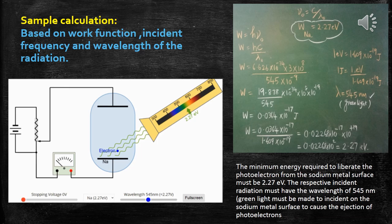Work function is the minimum energy required to remove the electron from the metal surface. The work function here is given in joules. To convert the joule value into electron volts, 0.0364 into 10 to the power of minus 17 joules is divided by 1.609 into 10 to the power of minus 19. After conversion, you get the answer as 2.27 electron volts. That is the work function of sodium metal, which is also shown in the animation.